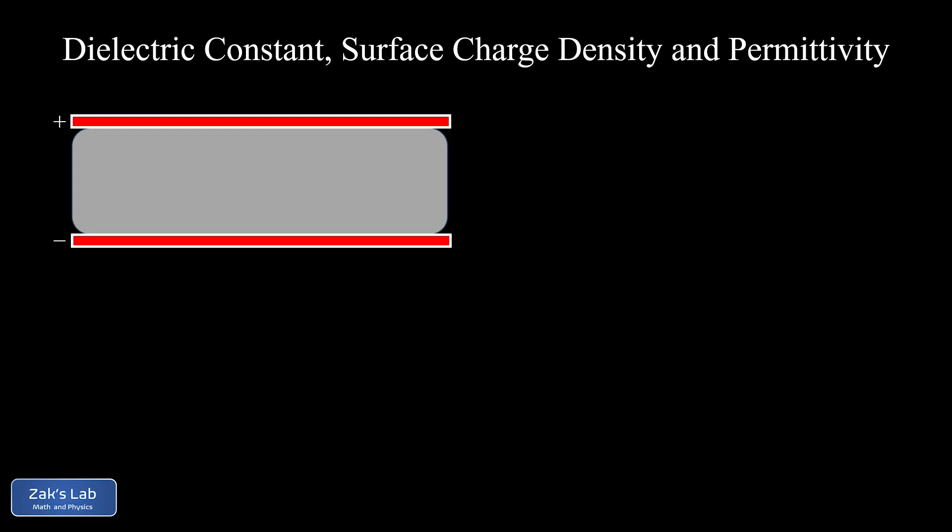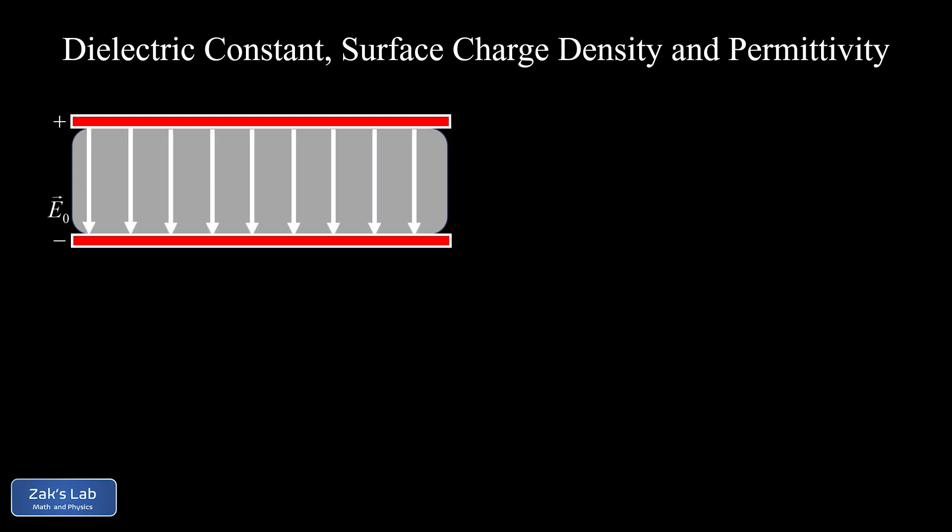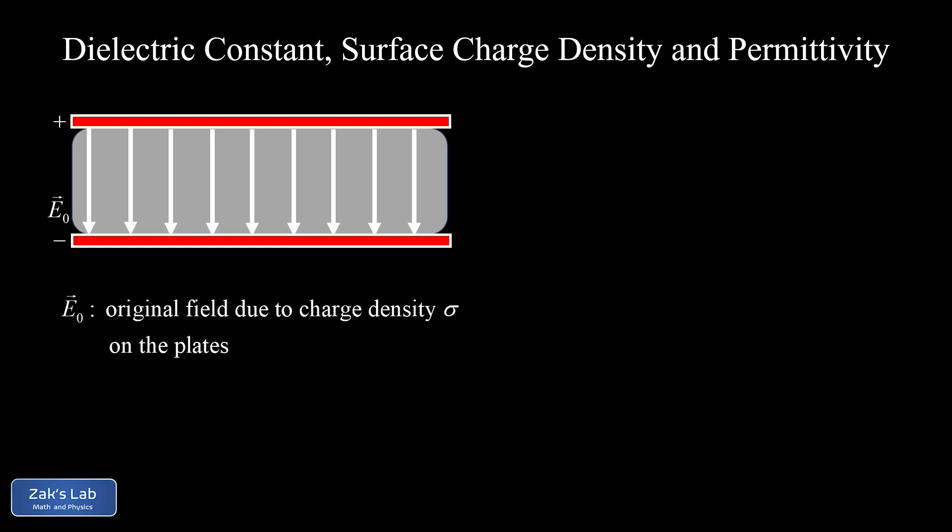We start with a capacitor that's been charged up with a battery and then disconnected, so the charge on the plates is going to be fixed for the remainder of the discussion. Remember, the electric field inside a parallel plate capacitor is uniform and points from the positive plate to the negative plate — we're going to call that E0, the original field due to the charge density sigma on the plates.